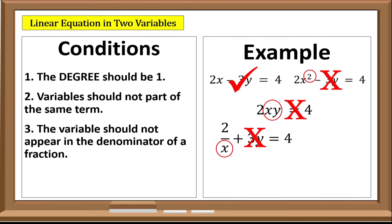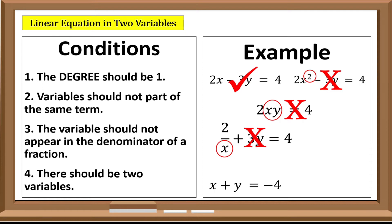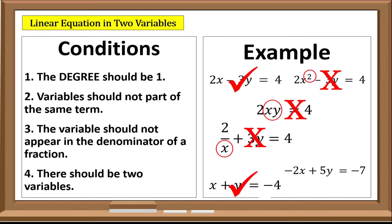Fourth, there should be two variables in an equation, such as this one: x plus y equals negative four, and negative two x plus five y equals negative seven.